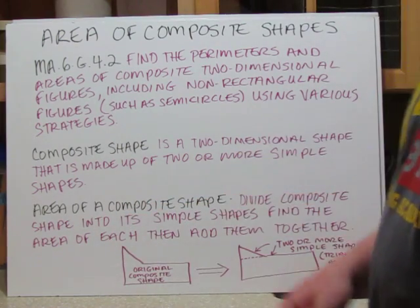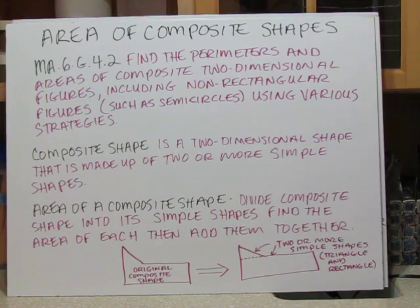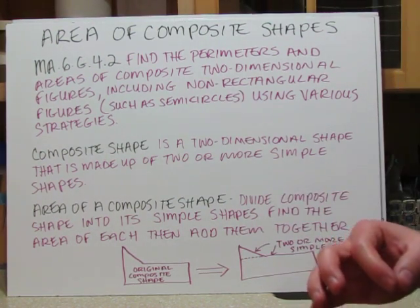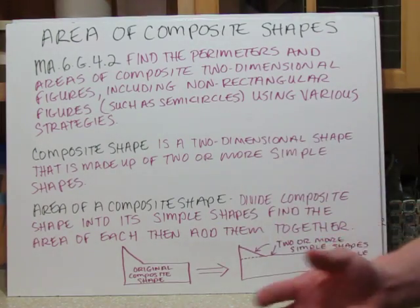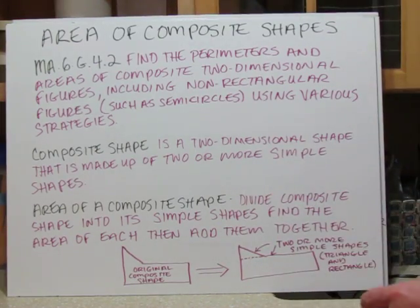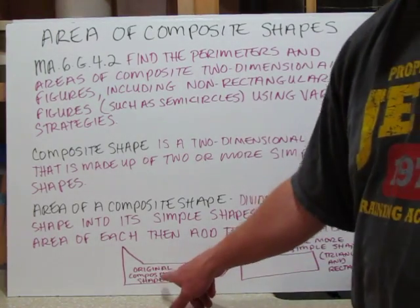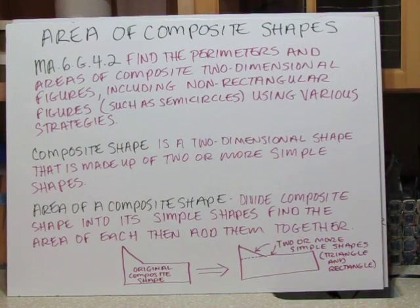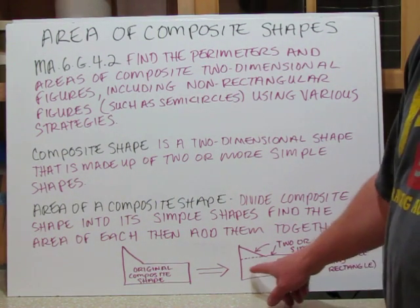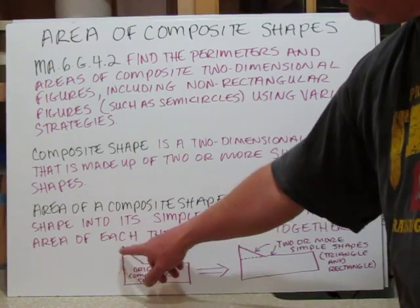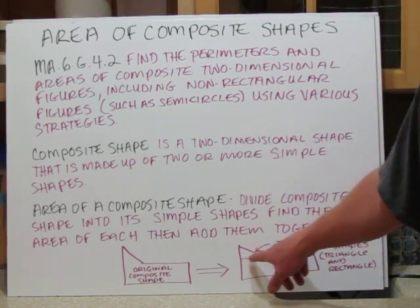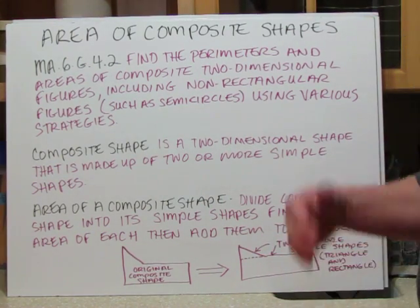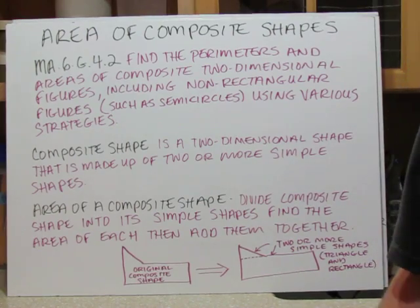To find the area of a composite shape, you divide the composite shape into its smaller, simpler shapes, and you find the area of each one of those simple shapes. Then you add all those areas together, and that gives you the total area. For example, you start with this original odd shape and say, I can see a triangle here and a rectangle here — divide it, find both areas, add them together.